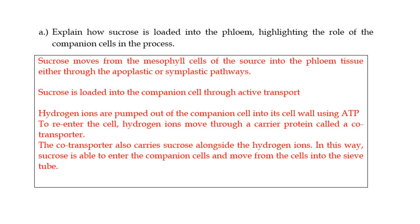The companion cells will pump out hydrogen ions into their cell wall using ATP. This is why it is called active transport. In order to reenter the cell from the cell wall, and remember the reason why this is, actually, let me just do a drawing so that I'm sure that you get what I'm saying.